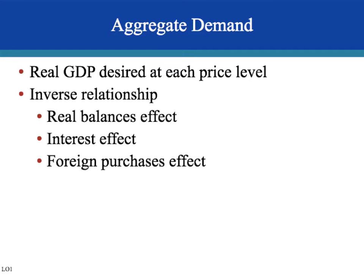Let's start with aggregate demand. Aggregate means total — all. We are looking at the amount of output, real GDP, the amount of total output that is desired at each price level. There's an opposite relationship between price level and output demanded.